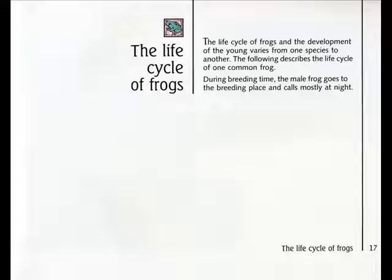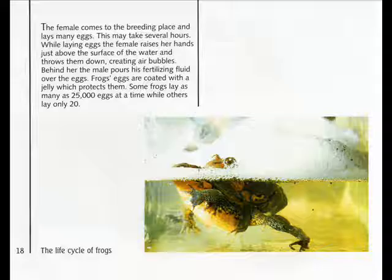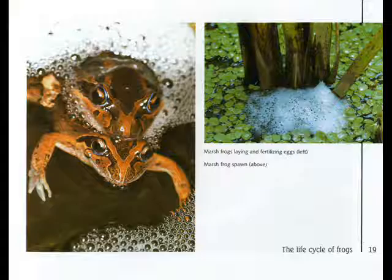The life cycle of frogs and the development of the young varies from one species to another. During breeding time, the male frog goes to the breeding place and calls mostly at night. The female comes to the breeding place and lays many eggs, which may take several hours. While laying eggs, the female raises her hands just above the surface of the water, throwing them down and creating air bubbles. Behind her, the male pours his fertilizing fluid over the eggs. Frogs' eggs are coated with a jelly which protects them. Some frogs lay as many as 25,000 eggs at a time, while others lay only 20.